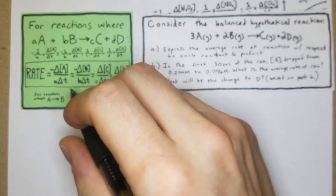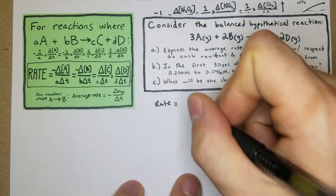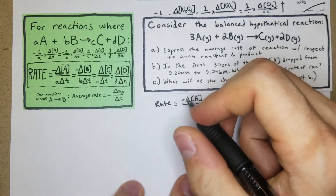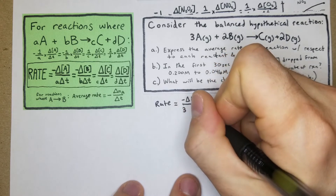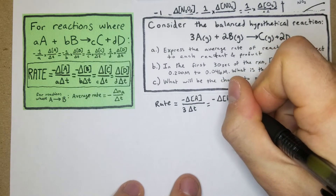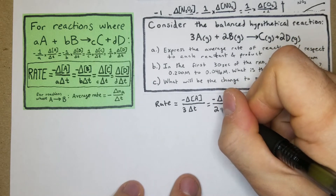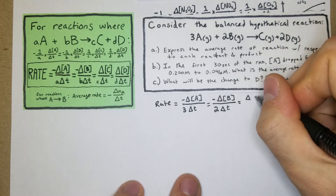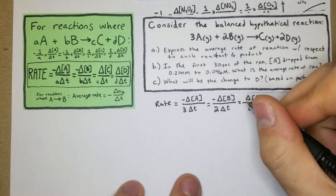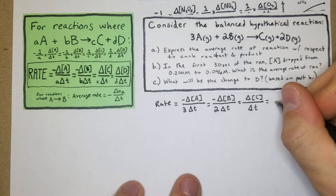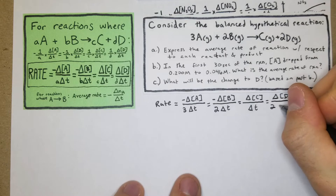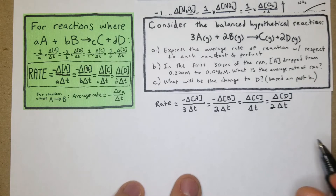For part a, we apply the rate formula: rate equals negative Δ[A] over 3Δt, which equals negative Δ[B] over 2Δt, and so on for C and D. The cool thing is that each section is equal to the others, so having one rate lets you derive all of them using the mole ratios.